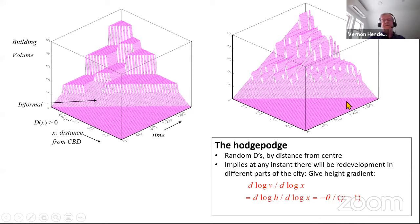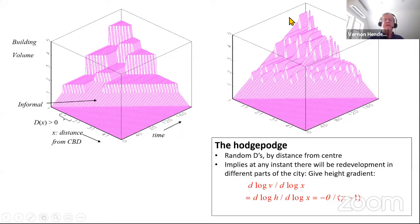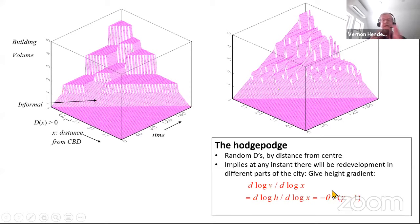Your neighbors redevelop first, but you continue to hold your building for its delta-tau length of life. When you redevelop, you do it to a higher height than them. This gives the hodgepodge we expect to see in the data — places where things are delayed a long time, places where formalization starts early — different histories and different times when buildings are redeveloped throughout the city.